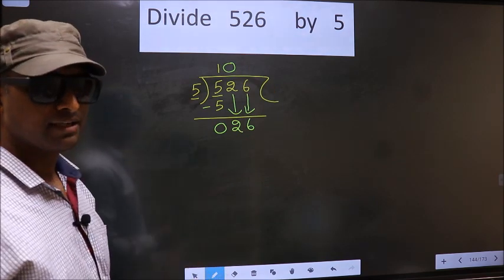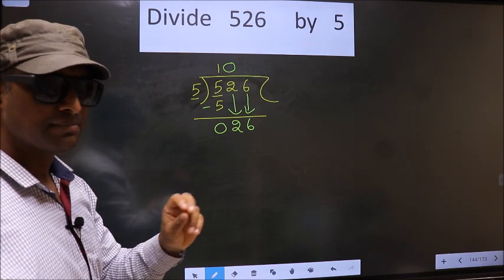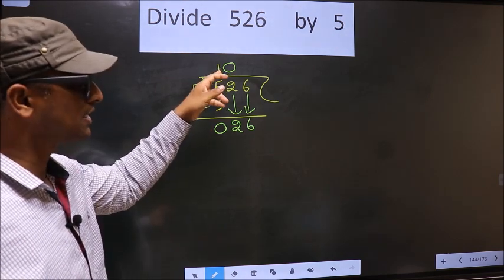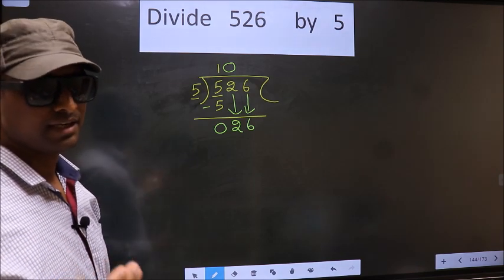I repeat. Whenever you are bringing down 2 numbers, you must put 0 in the quotient at the same time. Remember this point.